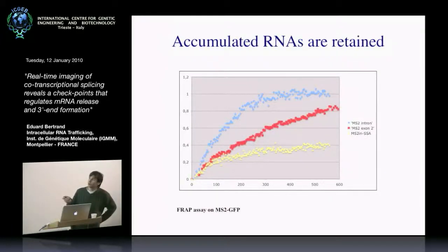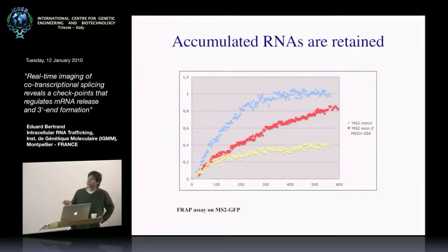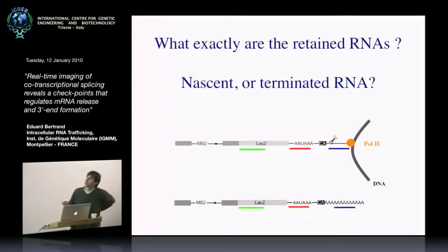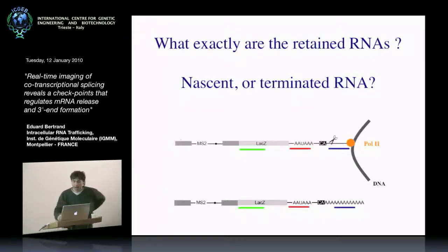We did FRAP experiments to analyze the kinetics of the RNA in spliceostatin-treated cells, and we could show that the RNA is very poly-dynamic — it stays at the transcription site for a very long time. This means the RNA is retained at the transcription site, and this is why you accumulate RNA there once you inhibit the splicing reaction. The question is: what exactly are these retained RNAs? There are two possibilities: they are still attached to the transcribing polymerase, or they are detached from the gene and retained by some unknown mechanism near the transcription site.